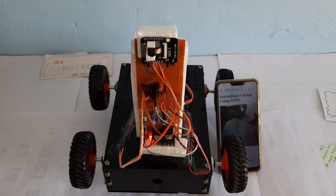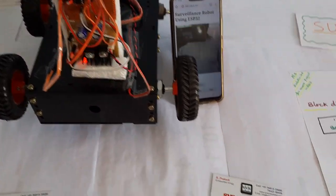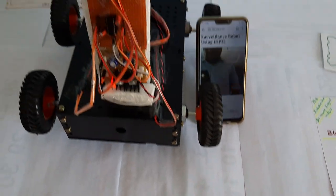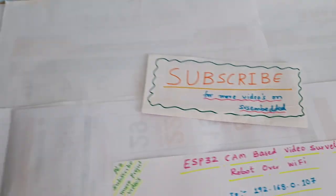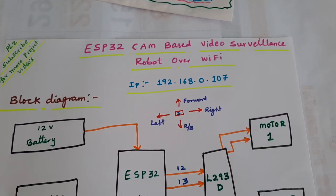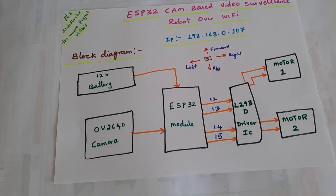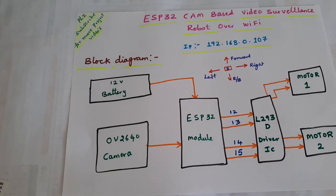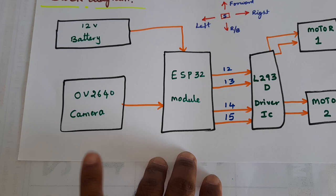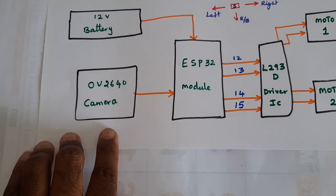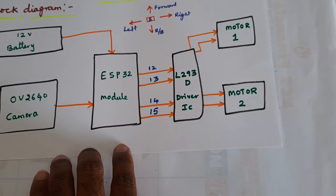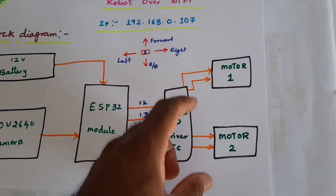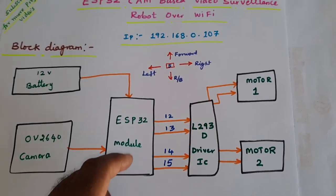Hi, we are from SVS Embedded. The project title is ESP32 cam based video surveillance robot over Wi-Fi. We are using ESP32 camera OV2640, ESP32 module, L293D driver IC, and two motors.